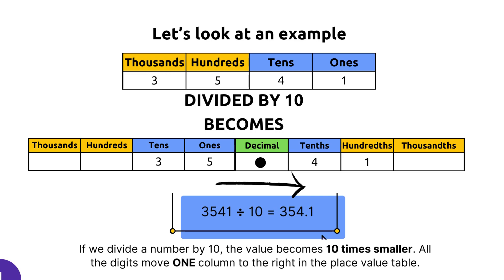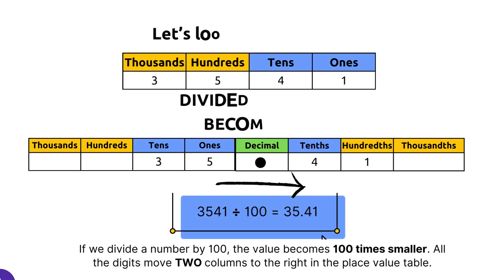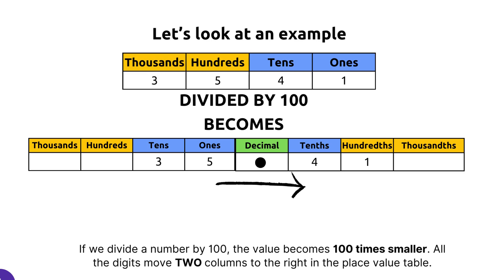Here we have another example where 3541 is being divided by a multiple of 10, which is 100. And in this case the numbers move two times to the right, and so we end up with 35.41.